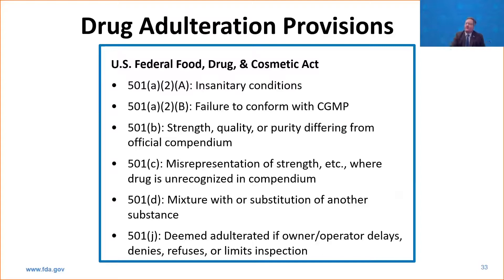Adulterated drugs come from the Food, Drug, and Cosmetic Act, which started in 1938 — some of the language is dated, but it still works today. It talks about if a drug is made under insanitary conditions — think Upton Sinclair's The Jungle, which was the impetus for that — or failure to conform with current good manufacturing practice. Section 501B covers strength, quality, or purity differing from an official compendium; the Food, Drug, and Cosmetic Act specifies the United States Pharmacopeia as an official compendium recognized by U.S. law. We also have 501C for misrepresented strength or sub-potent drugs not in a compendium, 501D which is substitution, and 501J where a drug is deemed adulterated if the manufacturer delays, refuses, or limits an FDA inspection.